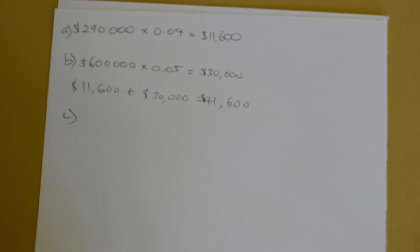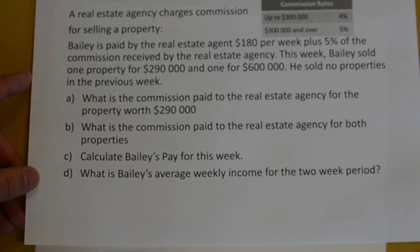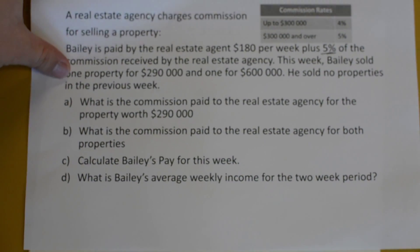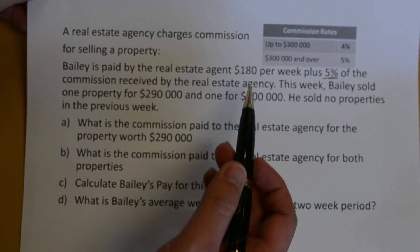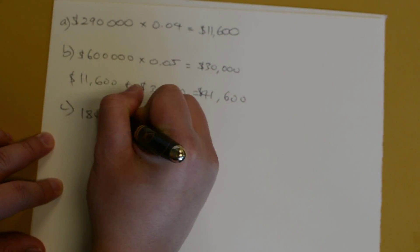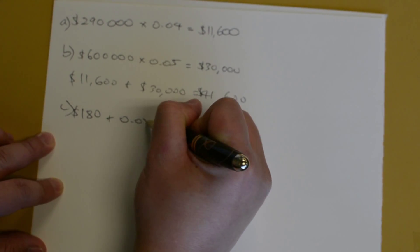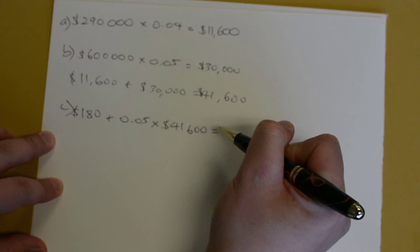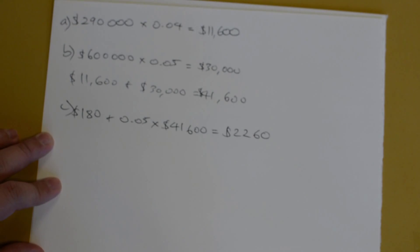Now Part C: calculate Bailey's pay for this week. Bailey earns 5% of the commission received by the real estate agency, which is $41,600. He also earns $180 per week as his retainer. So his total pay is $180 plus 0.05 times $41,600, which comes out to $2,260 — not bad for a week.